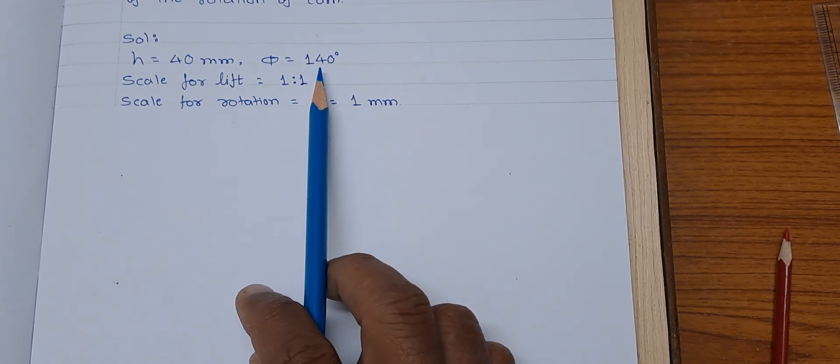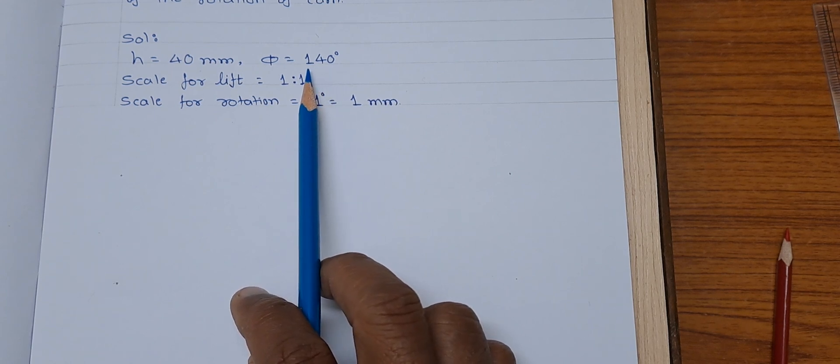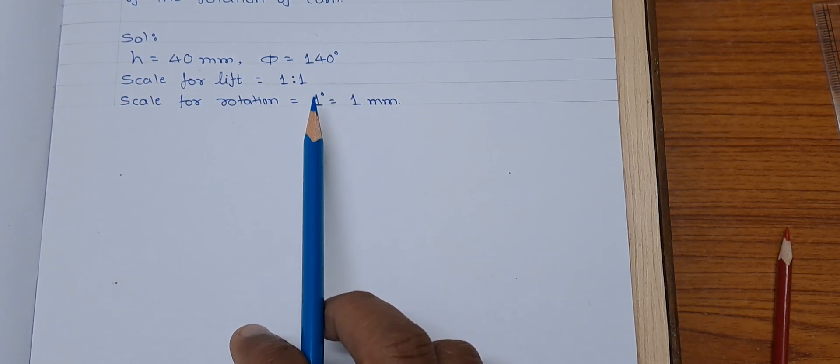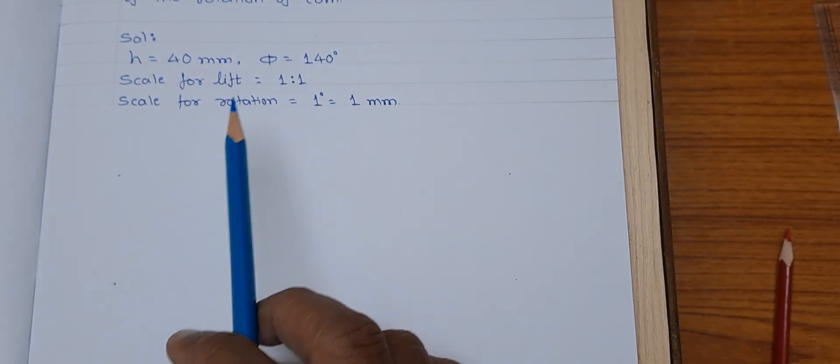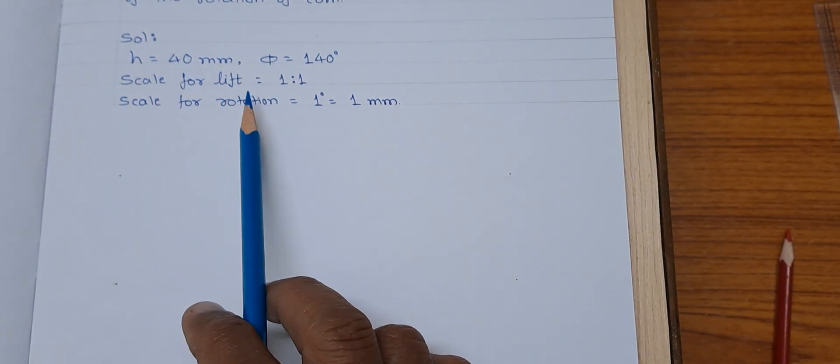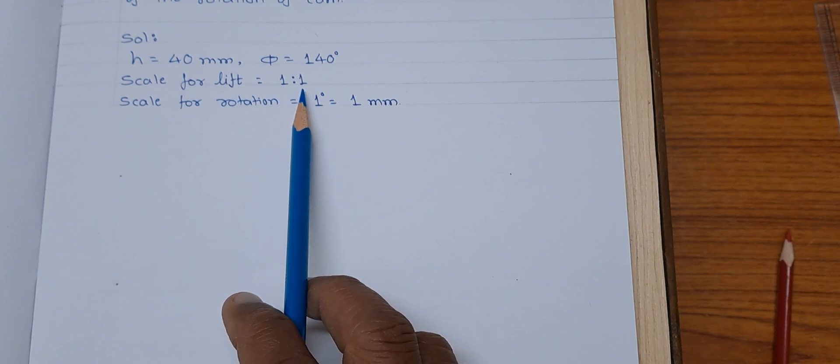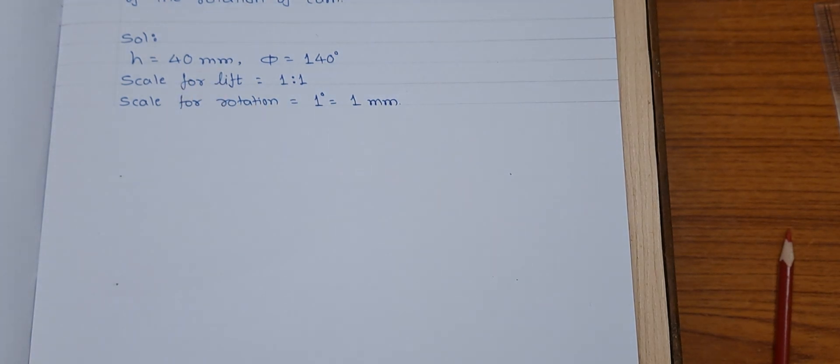So, for 140 degrees of rotation the length of the rectangle will be 140 mm and the height of the rectangle will be 40 mm as we have taken scale 1 to 1 for lift.